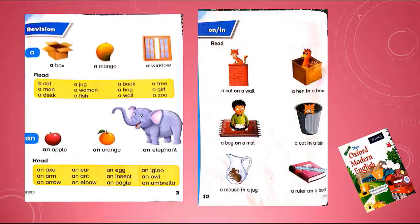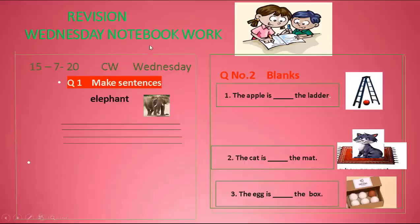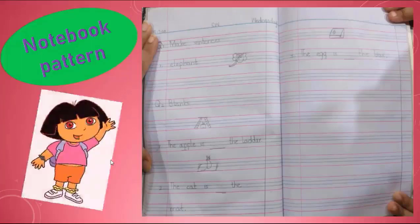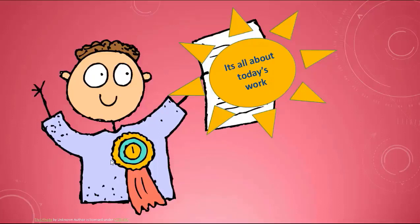We have taken from Oxford Modern English book page number 3 and page number 10. So revise it and do the given work. Have a plan on Wednesday's notebook work. Question number one: make sentences. Question number two: fill in the blanks. This is our notebook work section.